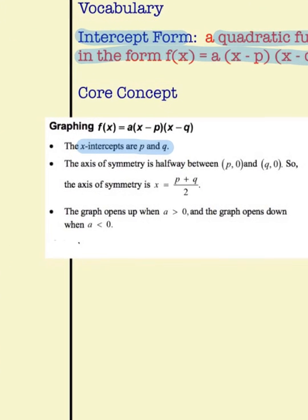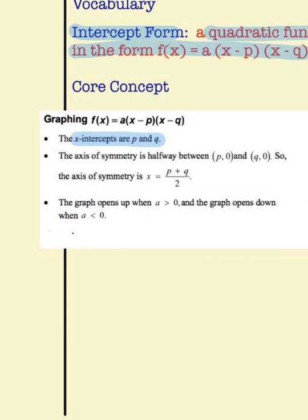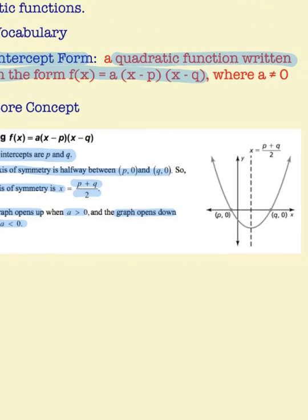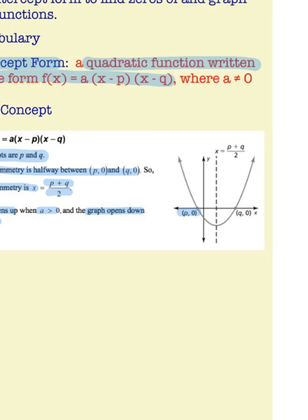Let's zoom in on the core concept. p and q, the numbers in the parentheses with x, are the x-intercepts. The axis of symmetry is halfway between those x-intercepts, which means the axis of symmetry is x = (p + q) / 2. Just like in standard form, the graph will open up when a is positive and open down when a is negative. In the picture, there's p and q as the x-intercepts, and the axis of symmetry is right in the middle, found with (p + q) / 2.